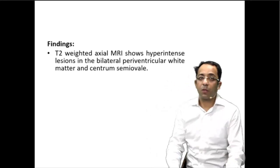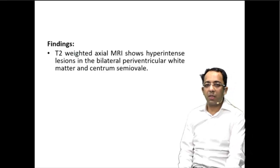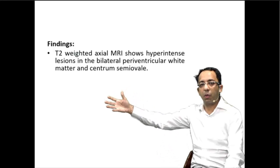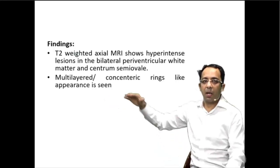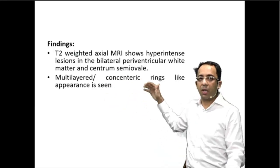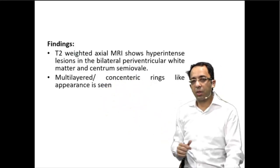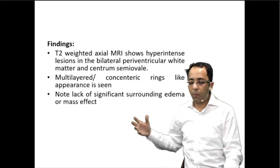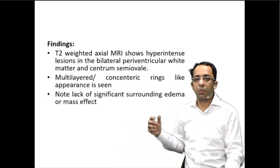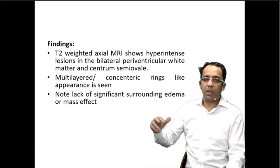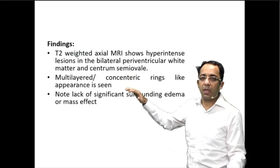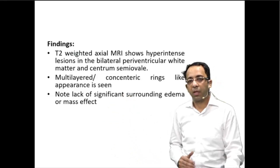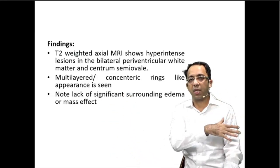Let's summarize. What we saw in this patient was hyperintense lesions in both the periventricular white matter and in the centrum semiovale area. These hyperintense areas had a multi-layered, concentric, onion-peel-like appearance. There is not much mass effect and not too much edema because of the lesion — all pointing towards a demyelinating illness.